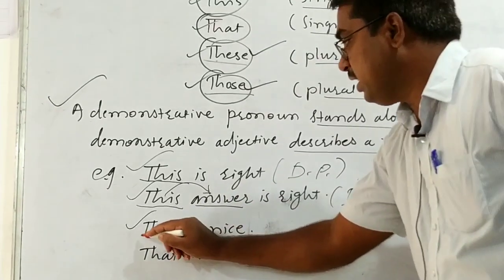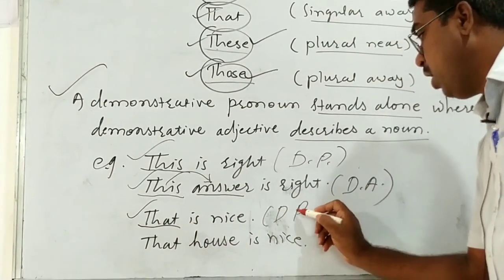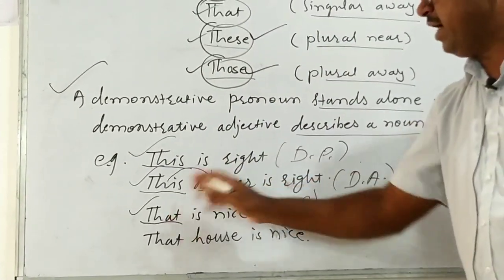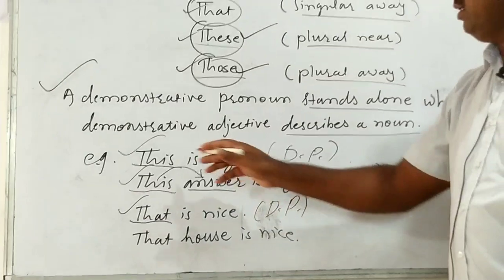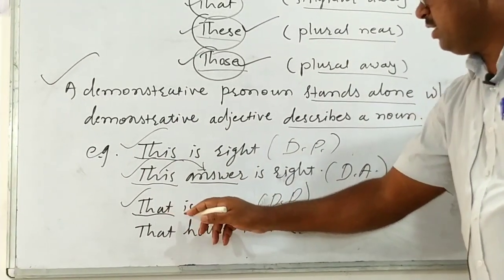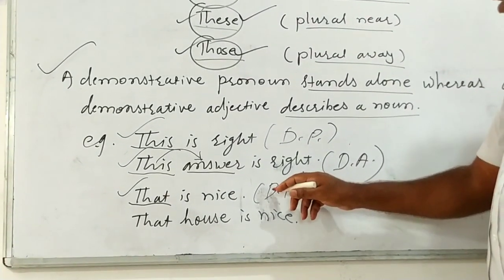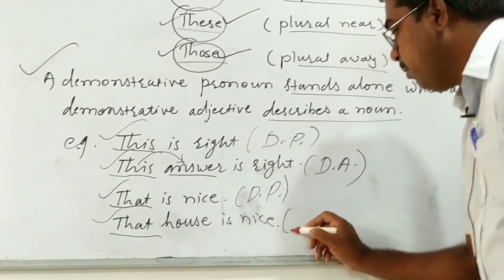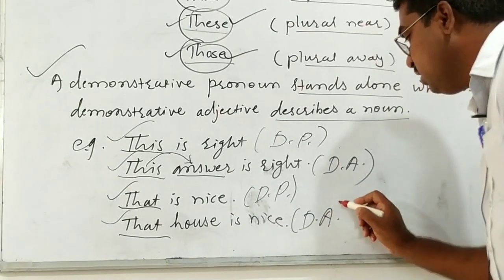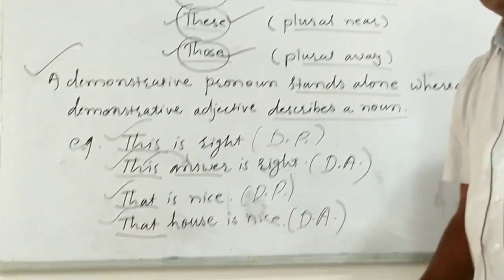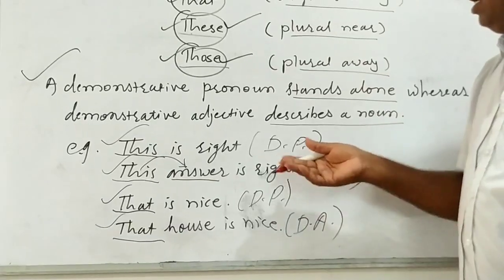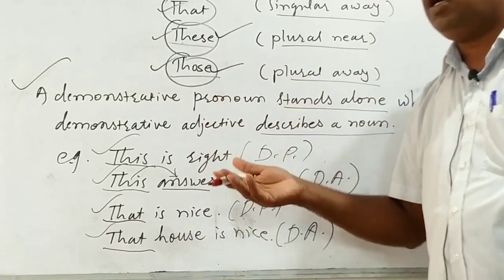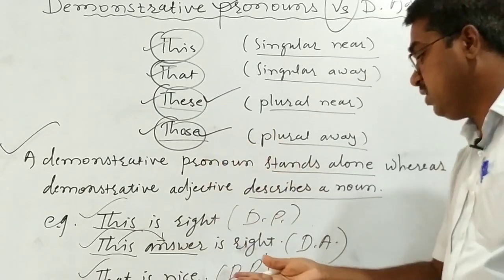Look at the next example: 'That is nice.' In this example, 'that' is functioning as a demonstrative pronoun — 'that' itself is the pronoun functioning as the subject, just like 'this' in the first example. Now look at the last example: 'That house is nice.' Here 'that' functions as a demonstrative adjective because it gives additional information about 'house' — it specifies or indicates a specific house. That house is nice, not just any house.